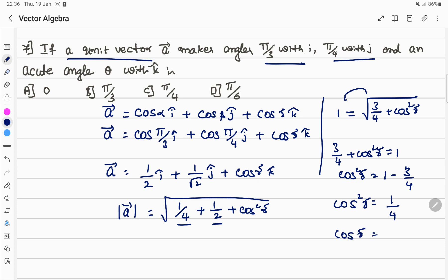Therefore cos squared gamma equals 1 by 4, so cos gamma equals plus or minus 1 by 2. For acute angle, it's 1 by 2, which is 60 degrees. Option B is the answer. Thank you.